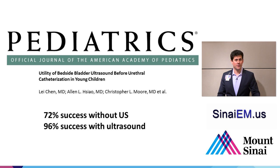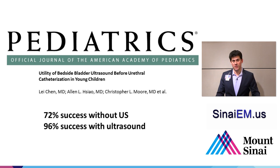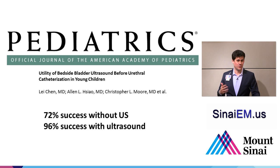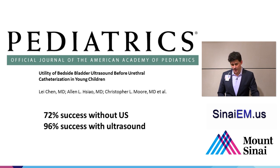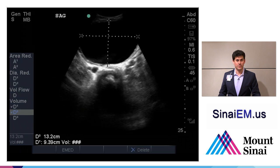Especially in a pediatric population when you need a urinalysis via catheterization, you can save a dry tap. One article in the Journal of Pediatrics found a 72% success rate with blind straight catheterization in infants versus a 96% success rate when ultrasound was used. In about a quarter of cases there wasn't enough urine to attempt catheterization, so they had the child nurse or take a bottle and try later — saving the patient and parents significant anxiety. Here an ultrasound machine demonstrates length, width, and height of the bladder to confirm sufficient volume.